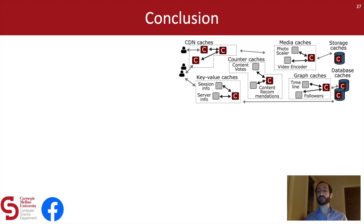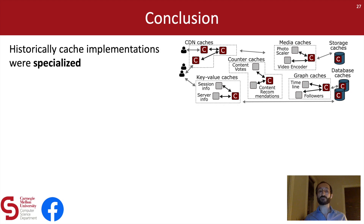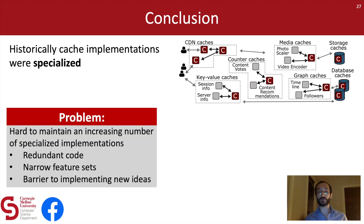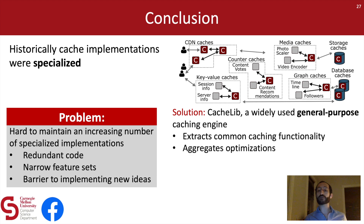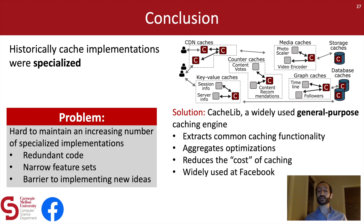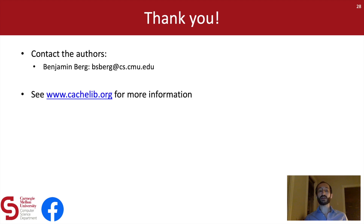To conclude, today I talked about the wide variety of caching use cases at Facebook which were historically maintained as specialized cache implementations. The problem with this approach was that they led to redundant code, systems with narrow feature sets, and represented a barrier to the uptake of new caching ideas at Facebook. Our solution was to deploy CacheLib, a general-purpose caching engine. CacheLib extracts common functionality from across caching use cases and aggregates optimizations from across engineering teams. CacheLib reduces the cost of caching and has been widely used at Facebook, where it now supports dozens of caching systems. Thank you for listening.